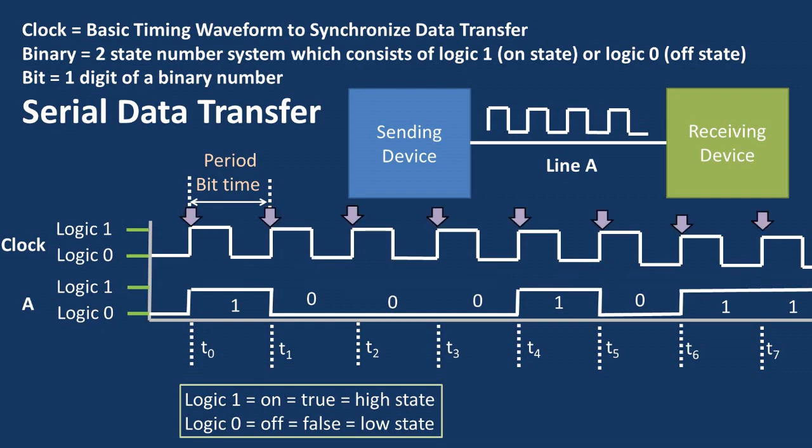In this example, we'll assume the data is transferred every time the rising edge of the clock square wave happens. It is useful to note that for certain circuits it can also happen on the falling edge.